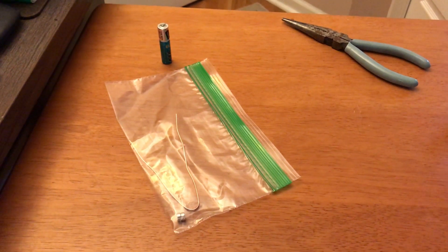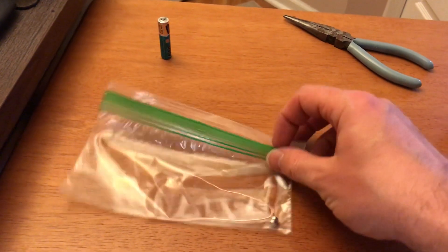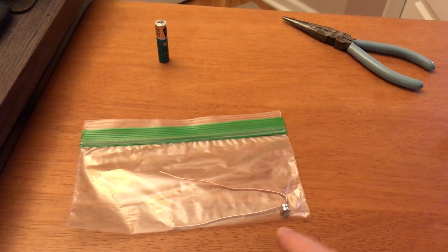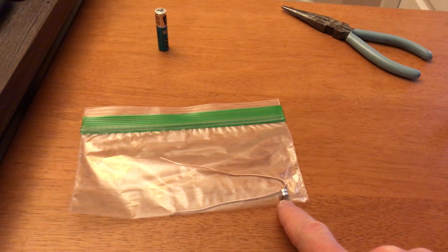Howdy folks! Alright, so you've hopefully picked up your motor kit and inside the baggie you'll have a piece of bare copper wire and a couple of magnets that are stuck together.